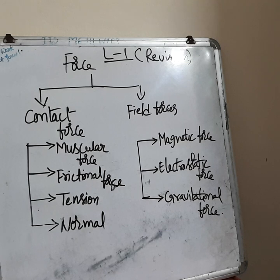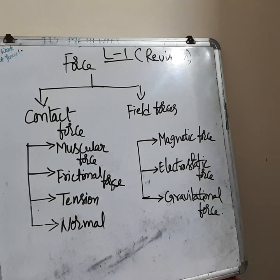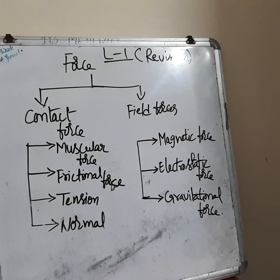Frictional force is the resistance to the movement of a body over the surface of another body. It depends on the surface: when the surface is smooth the object moves easily, and when the surface is rough the object moves slowly. For example, on a polished floor you can walk slowly but cannot run fast — you may skid because the frictional force is very less.